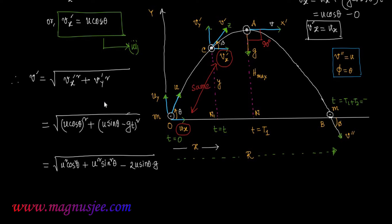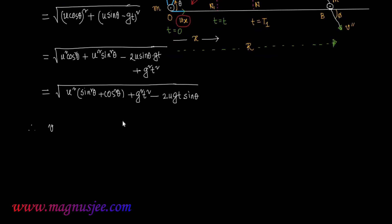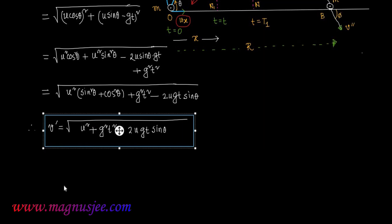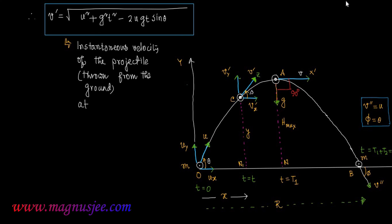Expanding and simplifying: u squared sin squared theta minus 2u sin theta times gt plus g squared t squared equals, taking u squared common under the bracket, sin squared theta plus cos squared theta, plus g squared t squared minus 2ugt sin theta. Therefore v prime equals the square root of u squared plus g squared t squared minus 2ugt sin theta. That is the expression for the instantaneous velocity of the projectile thrown from the ground at point C at instant t equals t second.